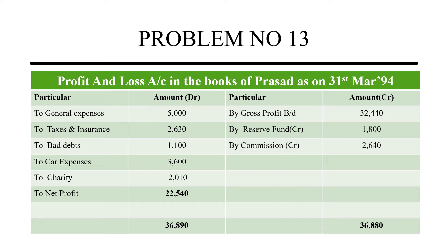Next one is bad debts. Car expenses — car expenses can be used for factory employees. At the admin level we use it, so that's why we have indirect expenses.